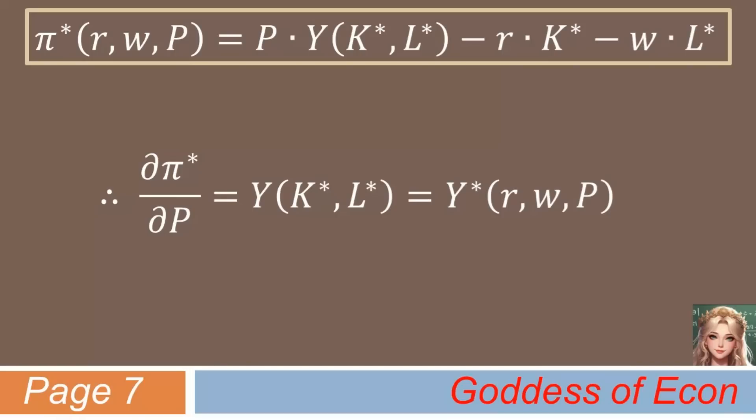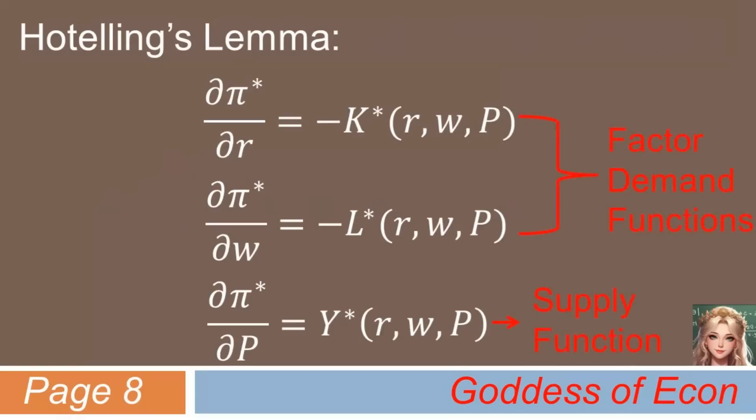So, here you are. What Hotelling's Lemma states is that if you partially differentiate the profit function or the maximum value function with respect to the price of an input, then you can derive the factor demand function corresponding to that particular input multiplied by negative 1. Also, if you partially differentiate the profit function with respect to the output price p, then you can get the supply function of the firm. So, Hotelling's Lemma can be simply thought of as a result in economics that relates the supply of a good to the maximum profit of the producer. It was first shown by Harold Hotelling and is a widely used concept in producer theory.